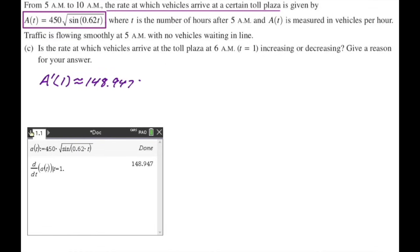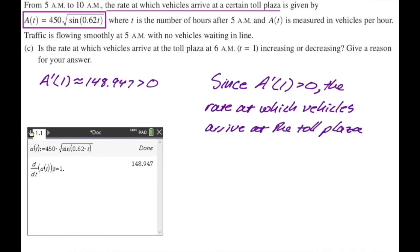Since A prime of 1 is greater than 0, the rate at which vehicles arrive at the toll plaza, A of T, is increasing at T equals 1. T equals 1 corresponds to 6 a.m., which is the real-world context.